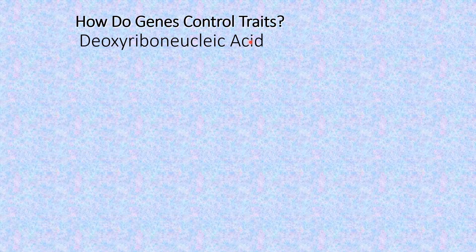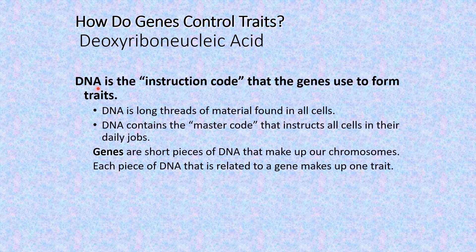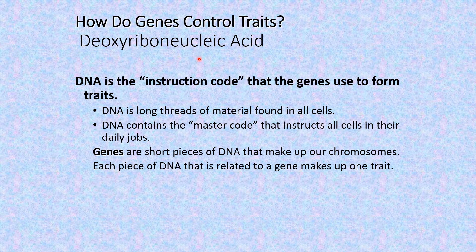How do genes control traits? DNA is the instructional code that genes use to form traits. DNA is the longest strand of materials found in all cells. DNA contains the master code that instructs all cells in their daily jobs. Genes are short pieces of DNA that make up our chromosomes. Each piece of DNA related to a gene makes up one trait. The full form of DNA is deoxyribonucleic acid.